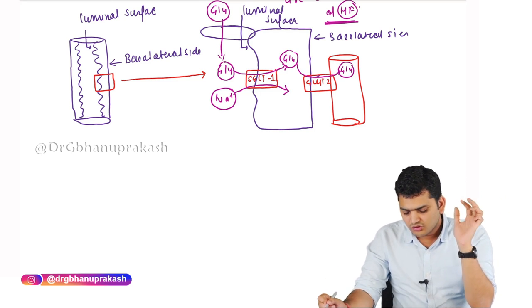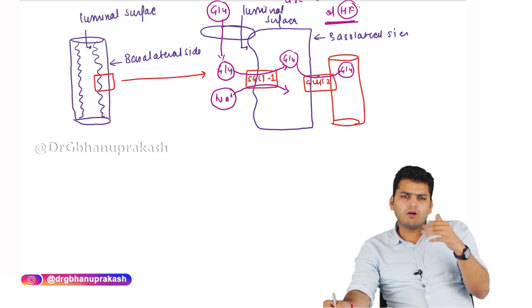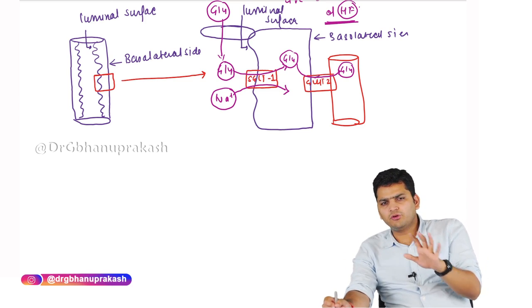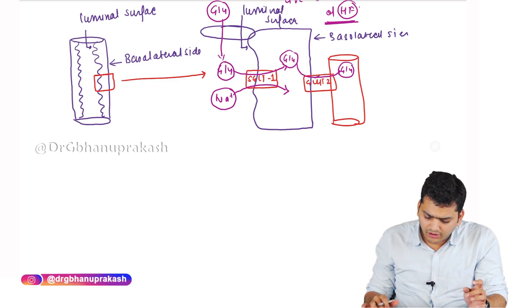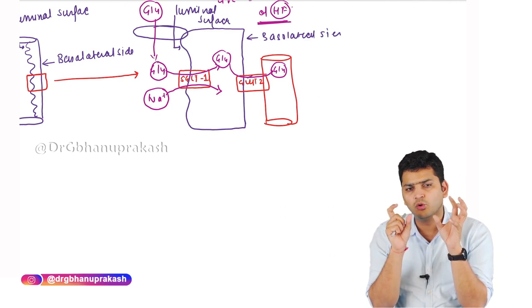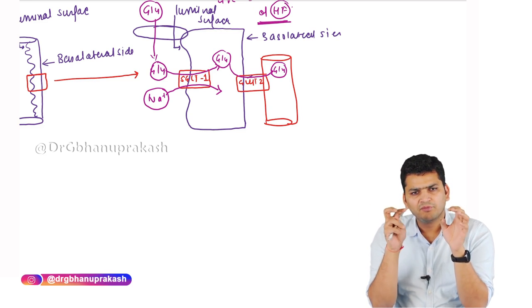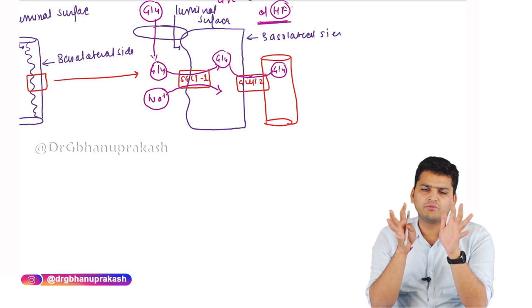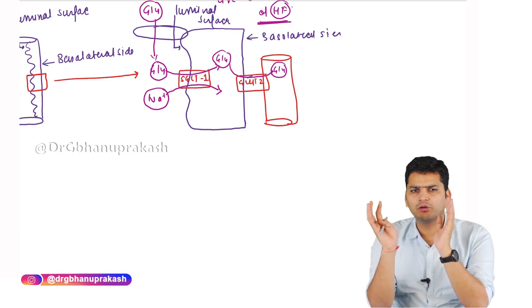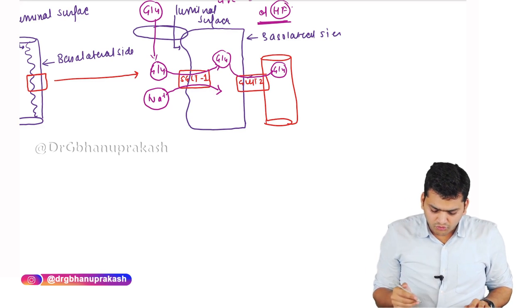Once glucose and sodium enter the intestinal wall via SGLT1, the glucose is then sent to nearby blood capillaries via GLUT 2. This is how glucose is absorbed from the lumen all the way to the blood — first using SGLT1, then GLUT 2. This same concept is used in ORS: ORS tastes both sweet and salty because both glucose and sodium are needed together for absorption via SGLT1.